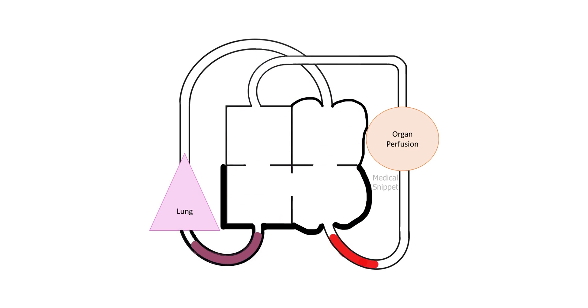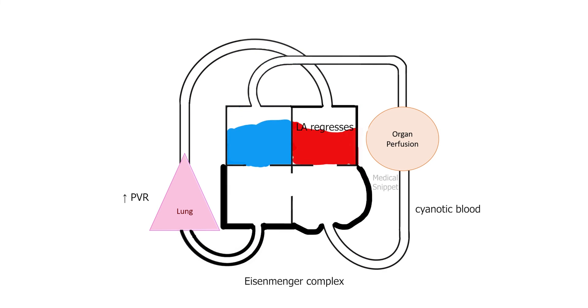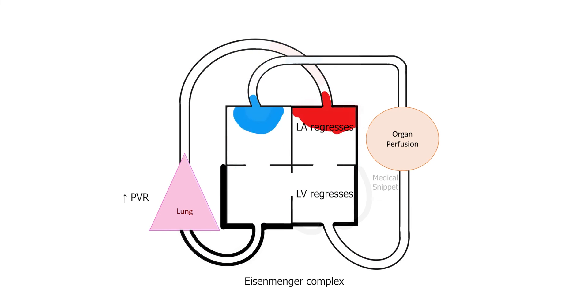If the VSD is not treated, the pulmonary vascular resistance increases in response to increased pulmonary blood flow. When the pulmonary vascular resistance increases more than the systemic vascular resistance, there is reversal of VSD shunt, that is it becomes right to left. The patient develops cyanosis and Eisenmenger complex. The left atrium and left ventricle regresses as there is no longer volume overload state. There will be only right ventricular hypertrophy.